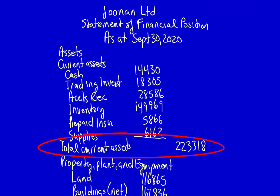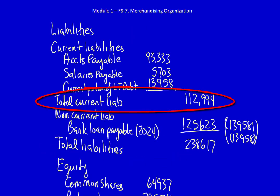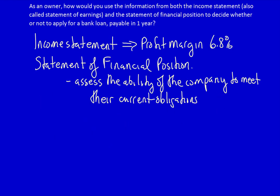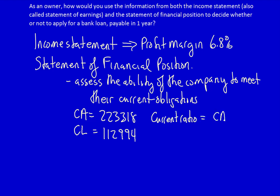The total current assets are $223,318. Those current assets are available to pay down our current liabilities, which are $112,994. We can use this information to calculate the current ratio. The current ratio is calculated as current assets divided by current liabilities. Here, that equals 1.97.